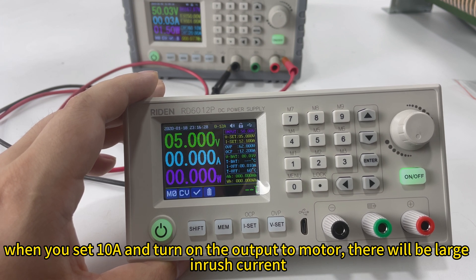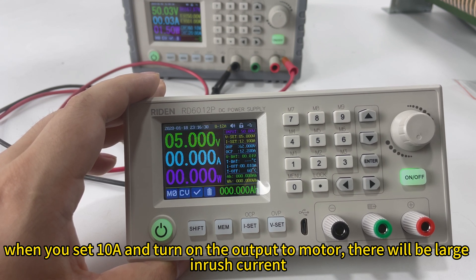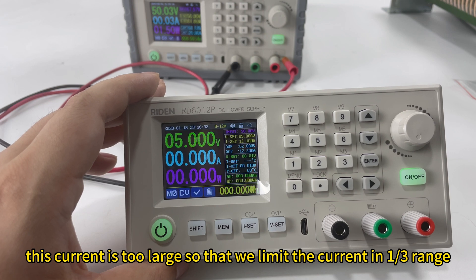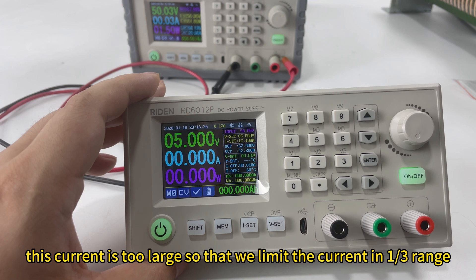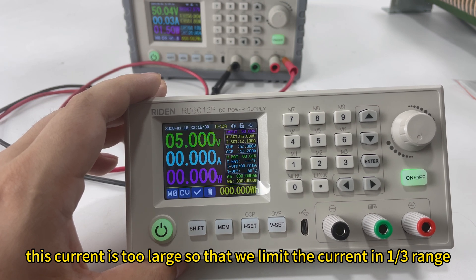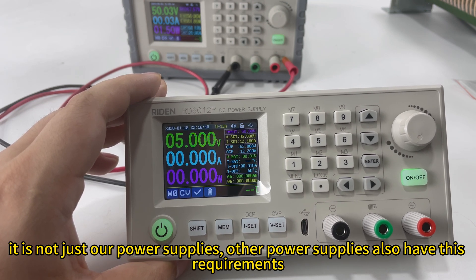It is not about the current consumed. When you turn on the output, there will be a large inrush current. This current will be very large. So we limit the output current to one third range to protect the device.